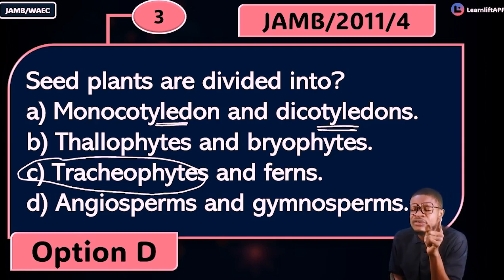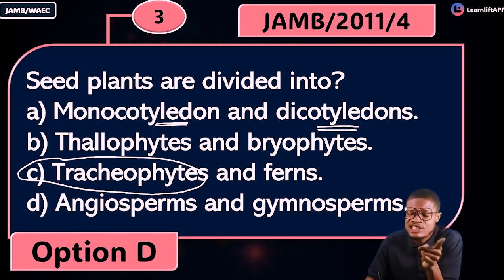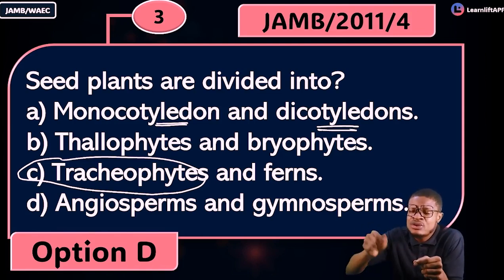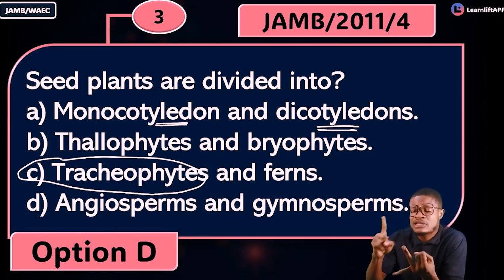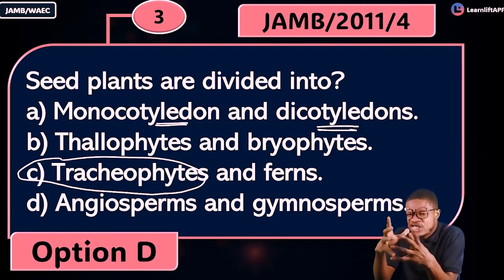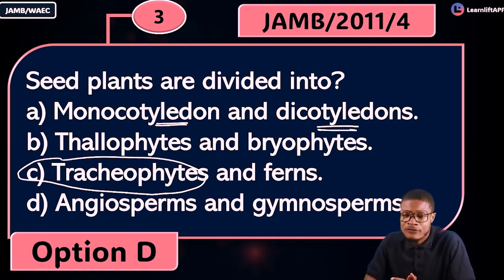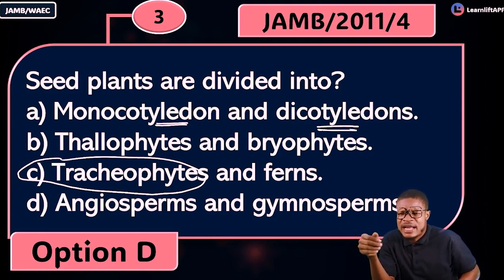Under the classification of plants, you can group plants into atrachophytes and trachophytes. Trachophytes are plants that have vascular bundles, starting from pteridophytes. So pteridophytes and spermatophytes are trachophytes. Atrachophytes include schizophytes, thallophytes, and bryophytes. JAMB doesn't stress heavily on trachophytes and atrachophytes, but it's good to know.